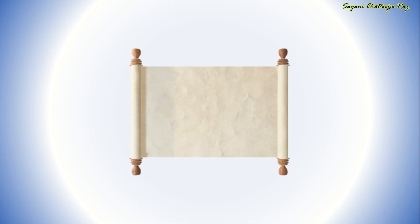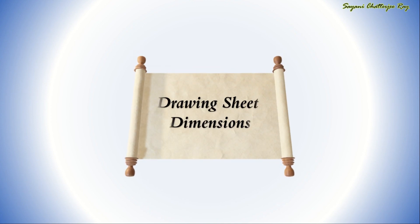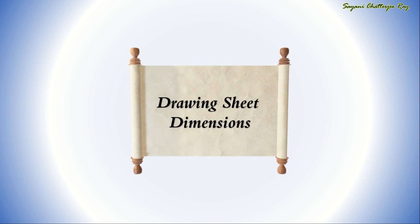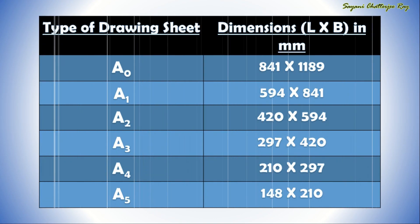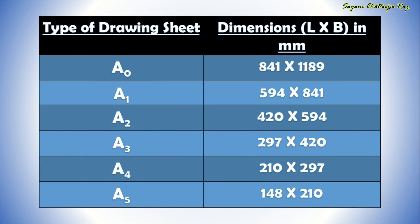Now we will talk about the dimensions of drawing sheets used in technical drawing. Drawing papers are available in many different sizes and varieties. All dimensions are in millimeters. A0 sheet is 841 mm by 1189 mm. Next is A1 which is 594 by 841. Next is A2 drawing sheet which we are going to use in our technical drawing, 420 by 594.